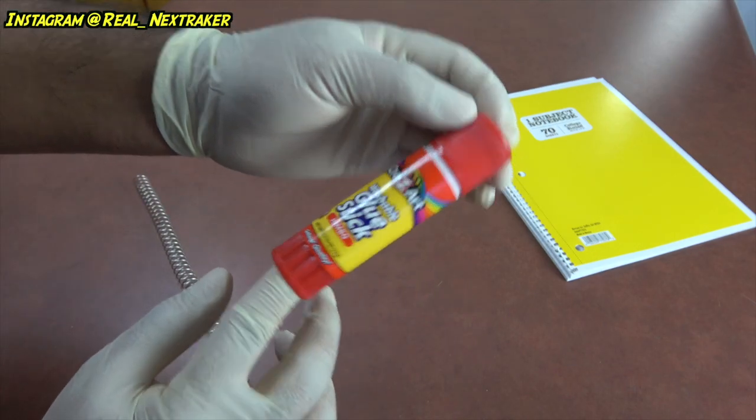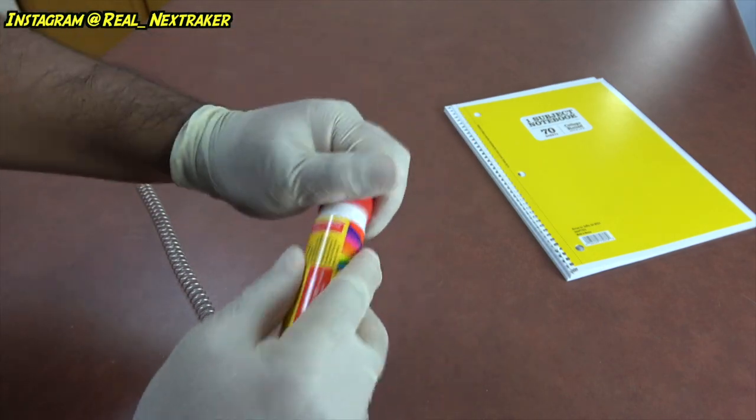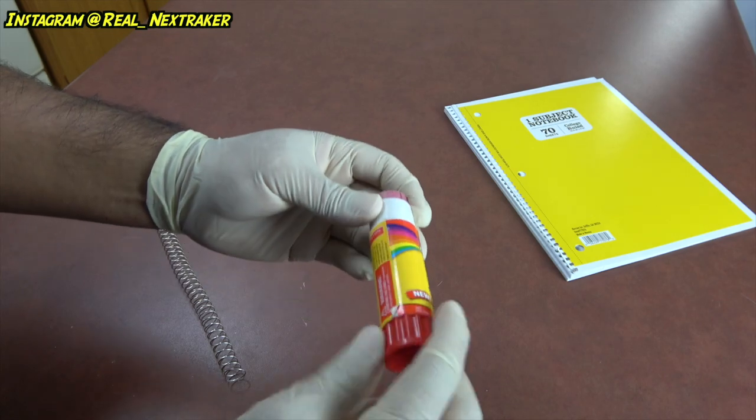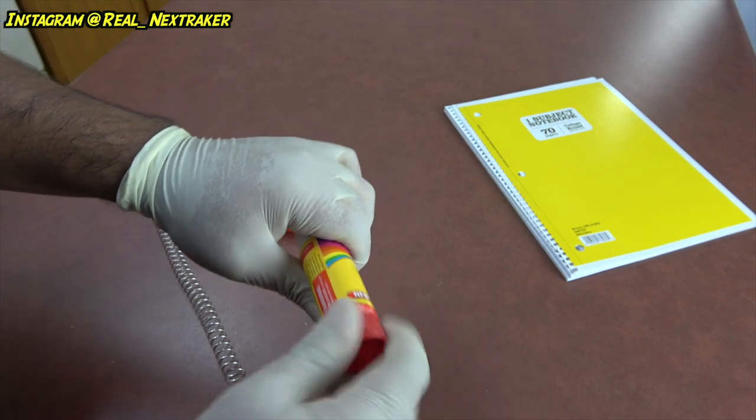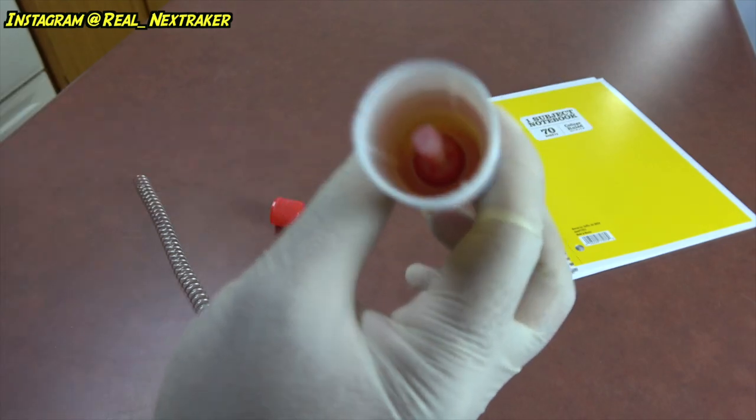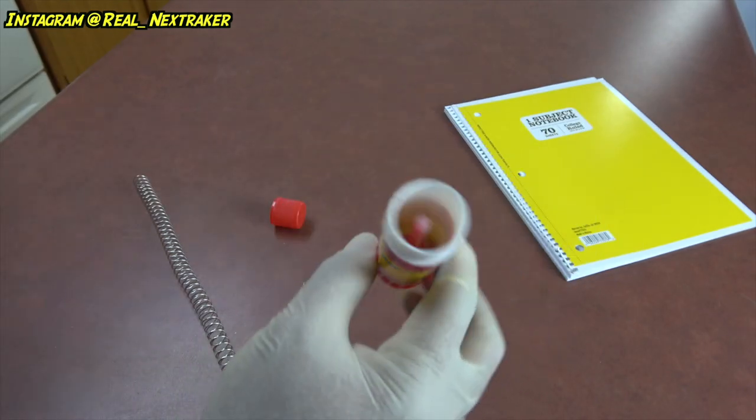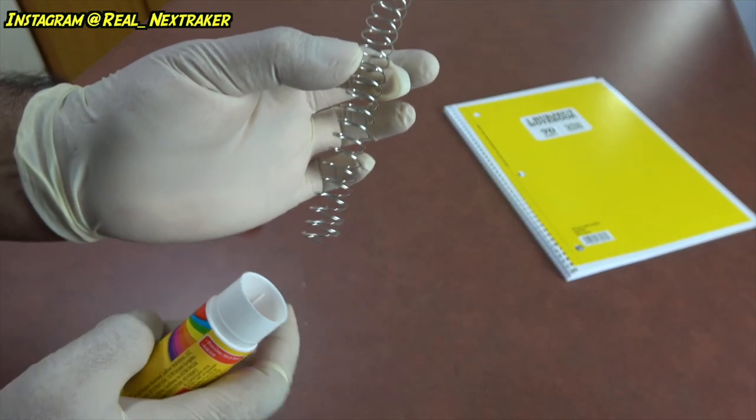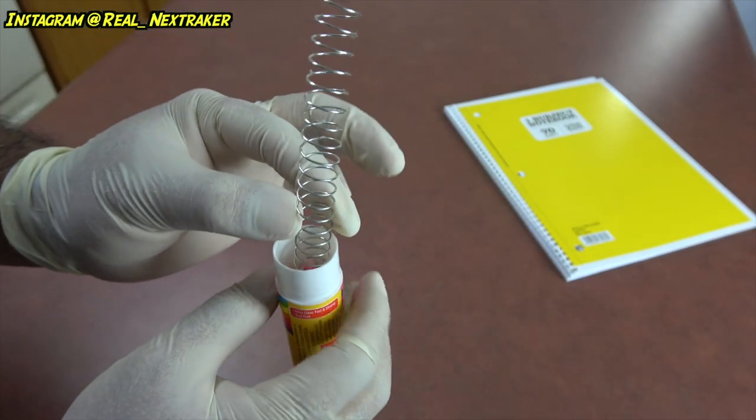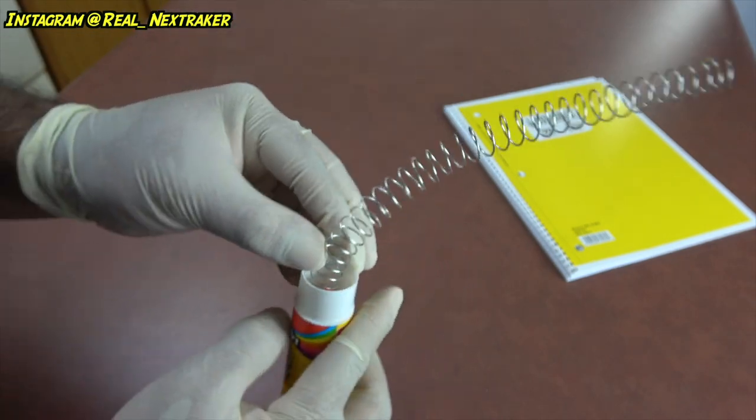That won't be hard either because we are basically gonna do the same thing we did with the spiral. We are gonna remove the entire stick of glue from the container. We basically just need the inside of the glue container to be hollow like this. Even though there's glue residue, it's still good. Apply some hot glue on one end of the spiral and push it inside the glue stick. Make sure it sticks to the inside very well.